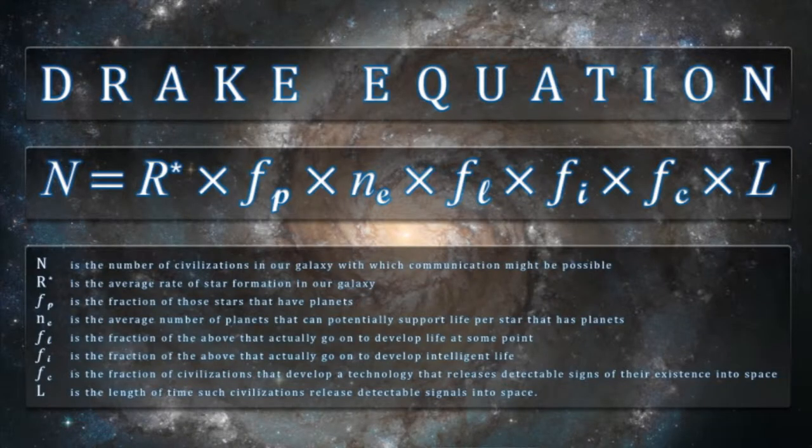The next fraction is the fraction of those planets where life formed where an intelligent species eventually develops. Again, we have no idea of that fraction. Some argue that it's inevitable because it happened here. Others argue that it took a long time, or it involves a lot of contingency and evolution, and so it's a low number. There's no way to decide.